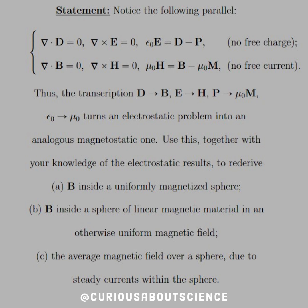The divergence of D is equal to 0, but the curl of E is equal to 0. Therefore, what we found was ε₀E equals D minus P. Meanwhile, the divergence of B is equal to 0, and the curl of the auxiliary field H equals 0. So we see the matter fields have different representations.